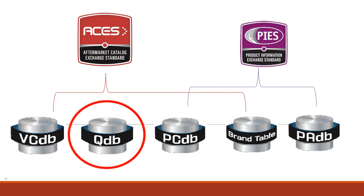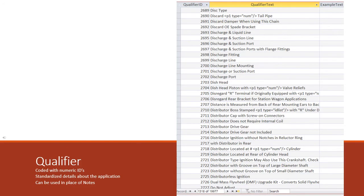The second database that supports ACEs is the QDB — the qualifier database — which consists of free text expressions typically found in application notes. Basically, you can code additional fitment information about a part number that is relevant to it in the part selection process. Data receivers many times like to see the notes coded when possible, as it ensures accuracy and can become a searchable field. The alternative to using the QDB is to use the free-form notes field in ACEs; notes are not a numerically coded field. Qualifiers are all assigned an ID and each has a qualifier text name. Some may require an additional parameter, while others are simply making a statement about fitment or information about the part itself.